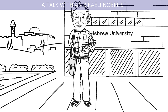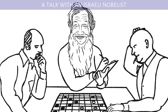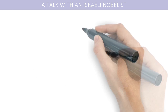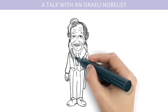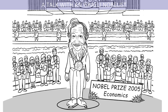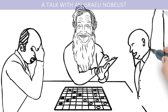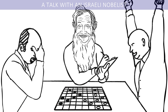His greatest contribution was in the realm of repeated games. He also won the 2005 Nobel Prize in Economic Sciences for being the first to define the concept of correlated equilibrium in game theory. But what is game theory? Let's hear it from Professor Aumann himself.